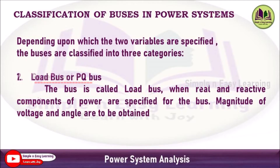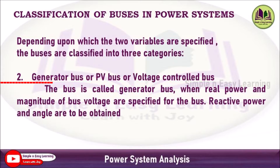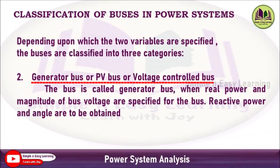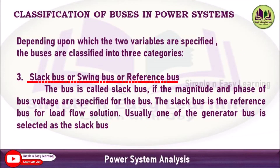The second one is a generator bus, also called a PV bus or voltage control bus. Here, real power P and voltage magnitude V are specified. The bus is called a generator bus when real power and magnitude of bus voltage are specified for the bus, and Q and delta are to be obtained.